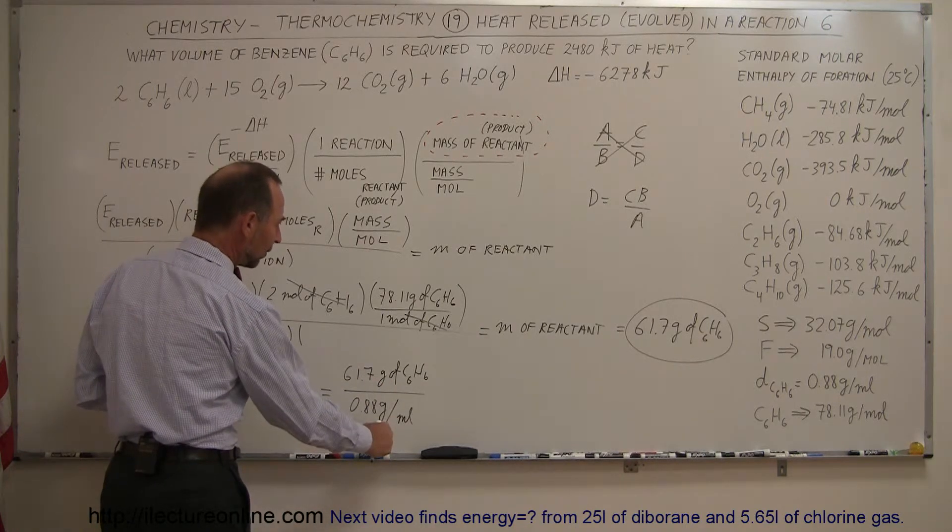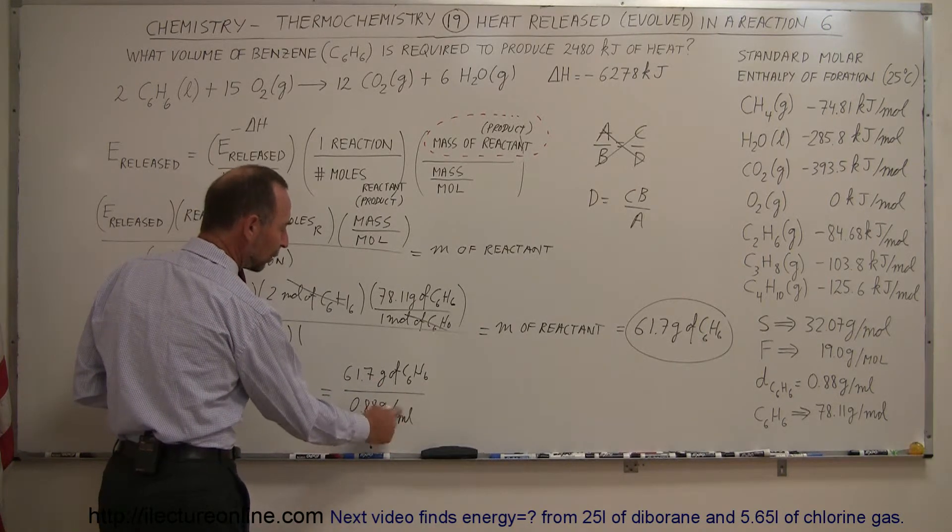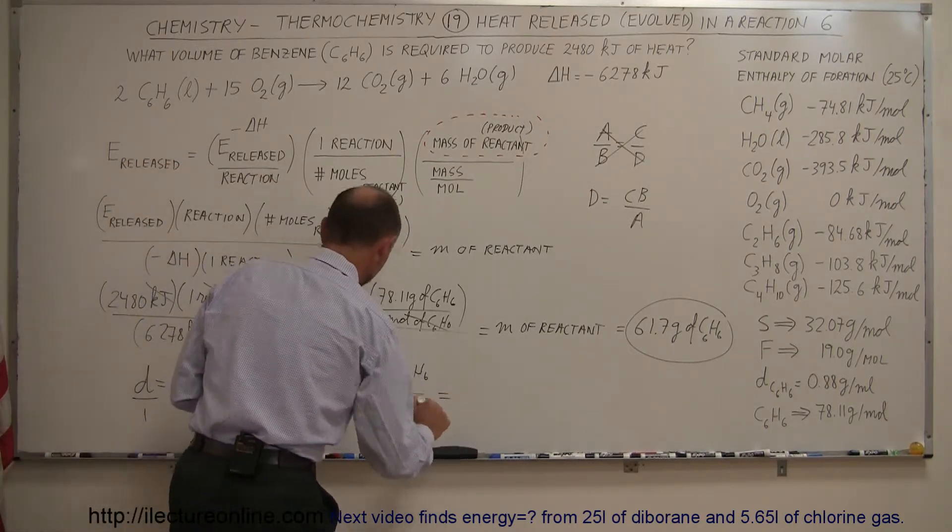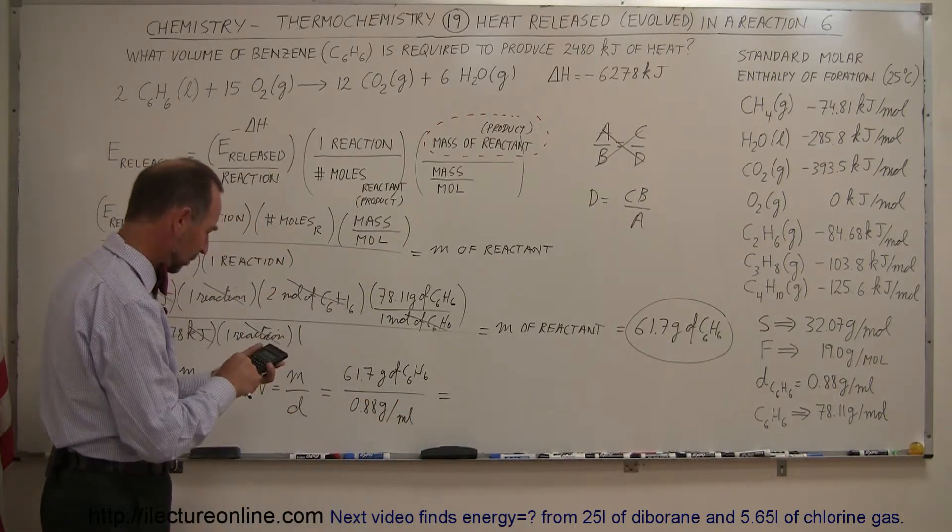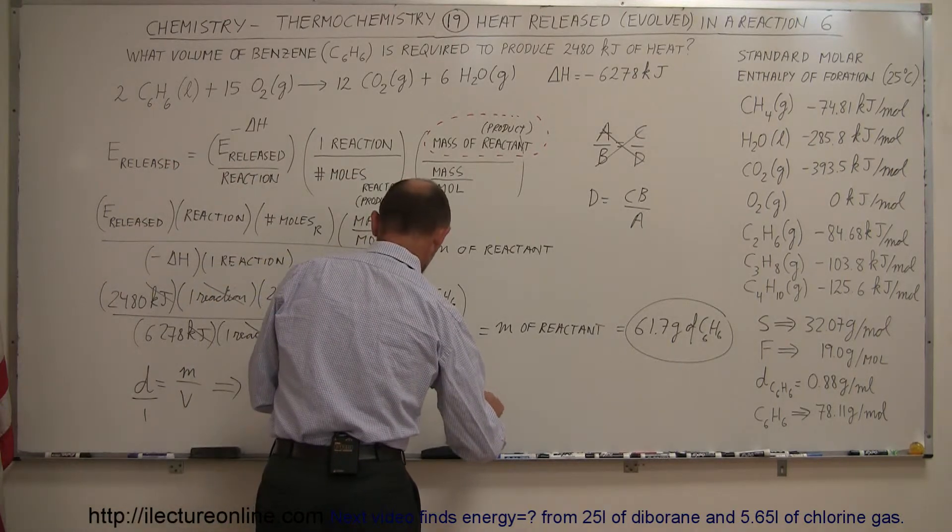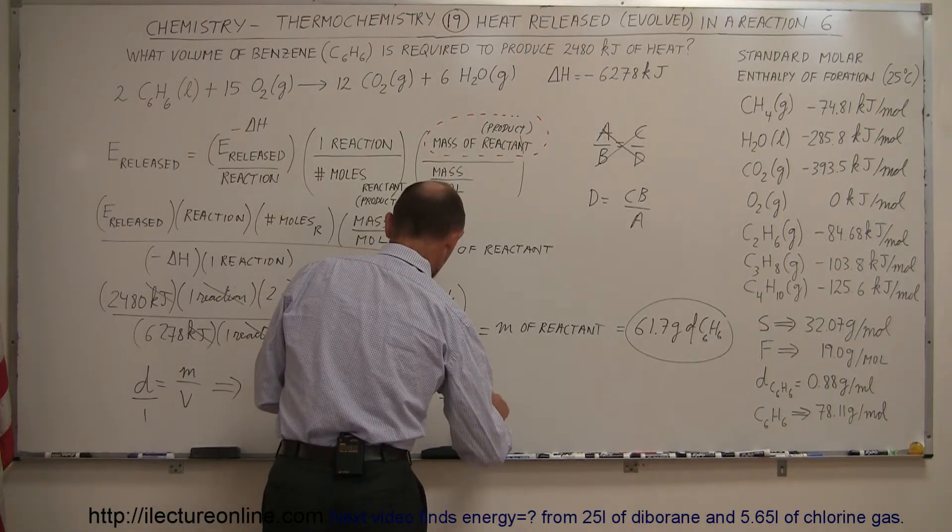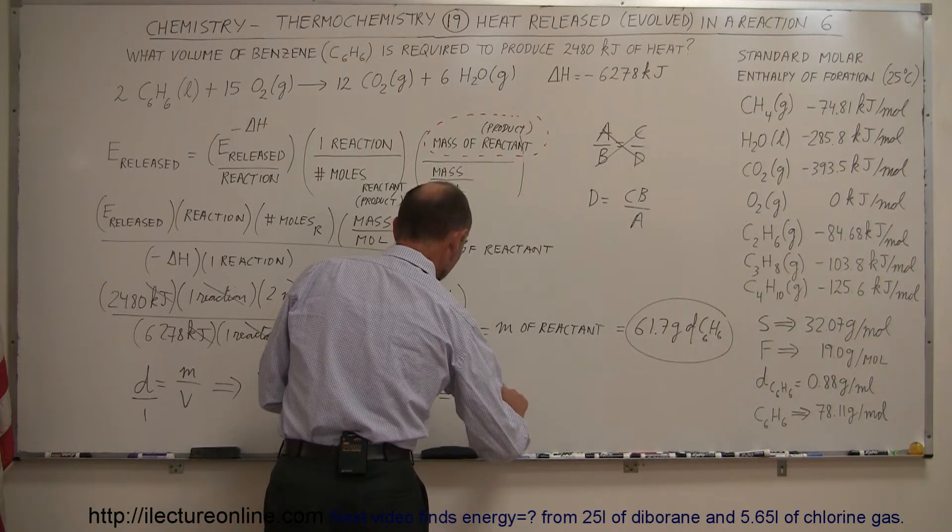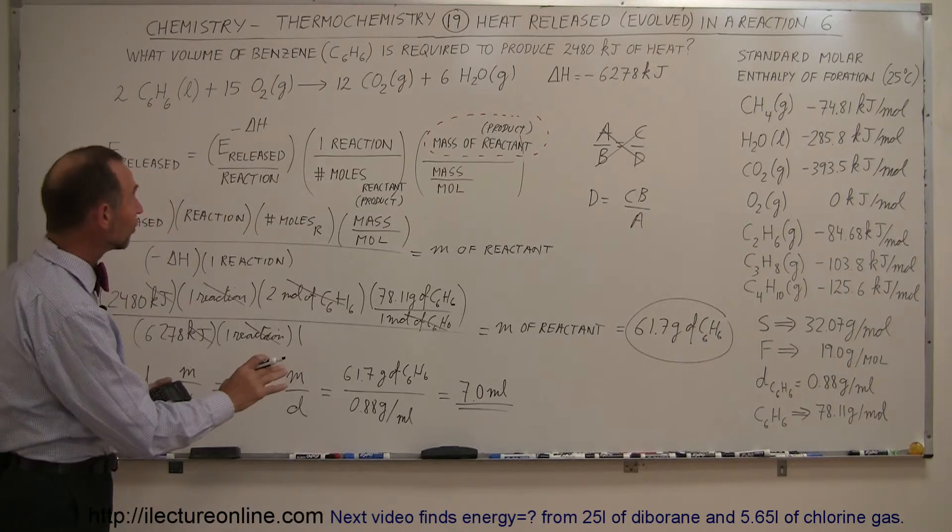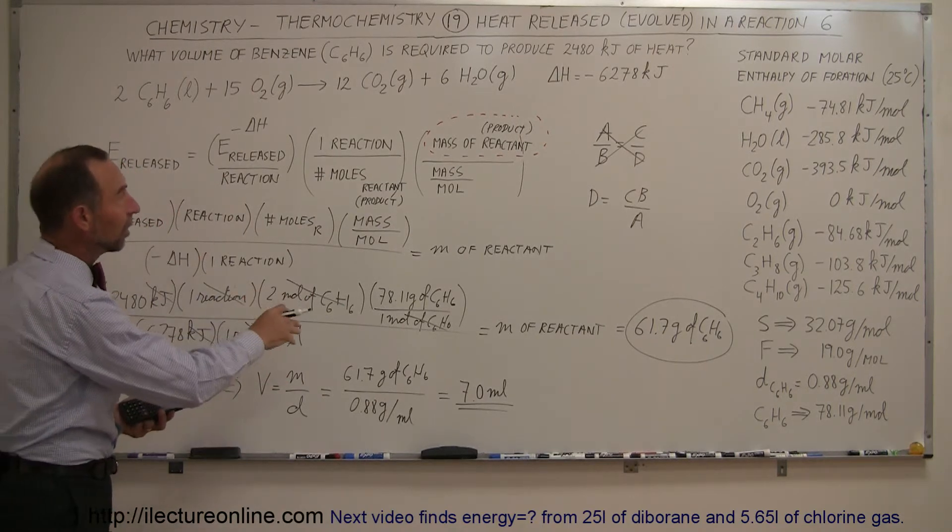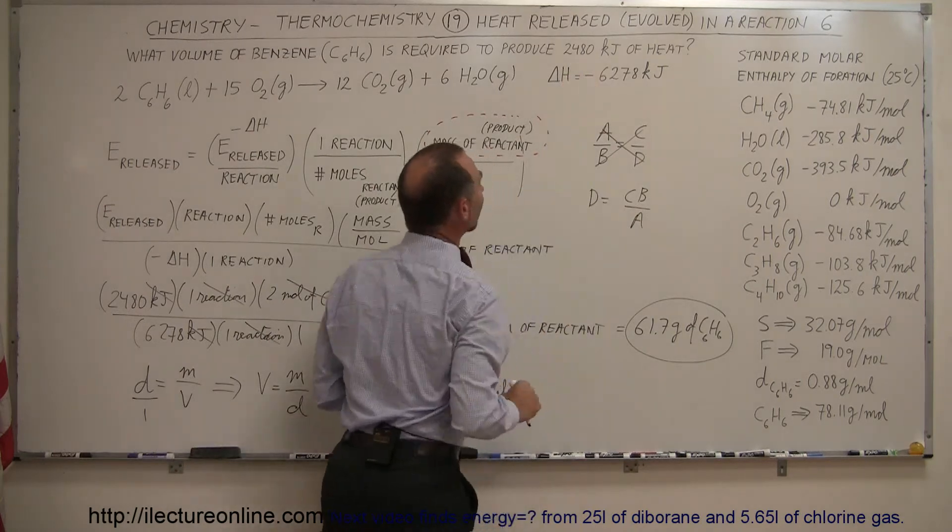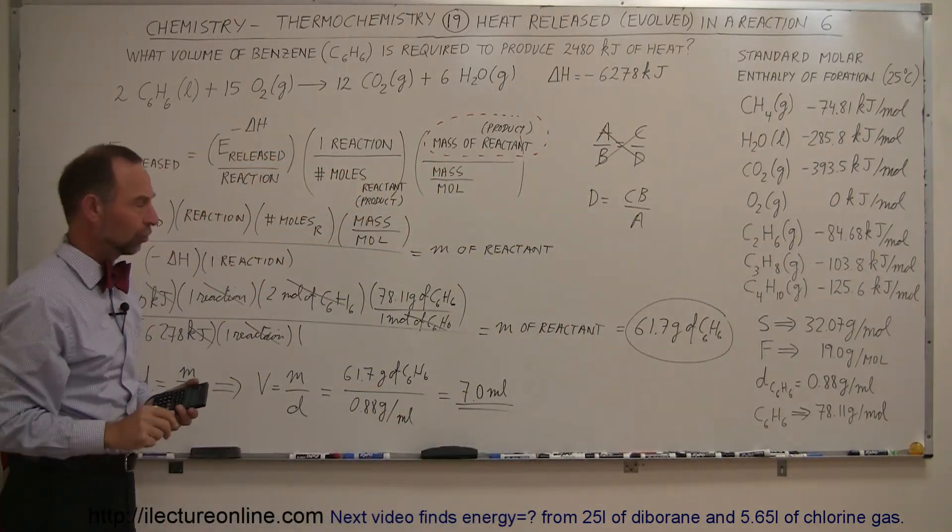So grams will cancel out, and since we have one over milliliter in the denominator, that then moves to the numerator, and so this will then be equal to, so divide this by 0.88 equals, and it would be 7.0 milliliters, and that would then be the answer. So 7 milliliters of benzene combusted will give you an energy release of 2,480 kilojoules.